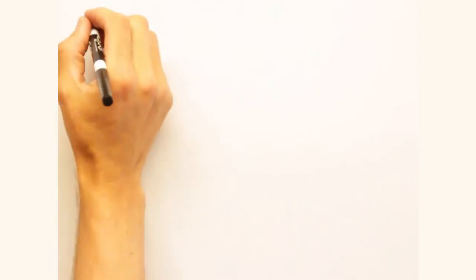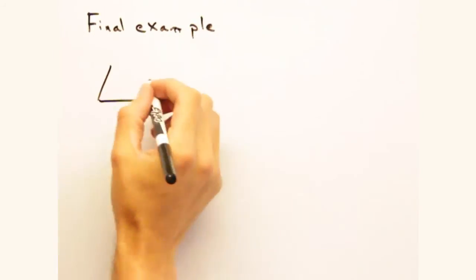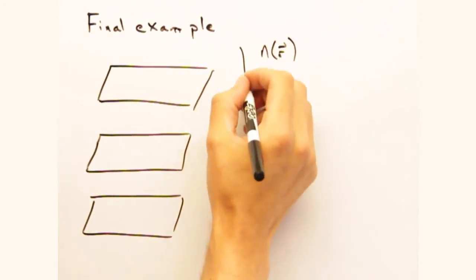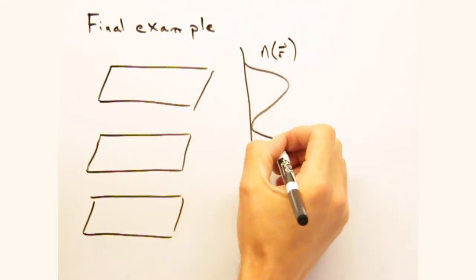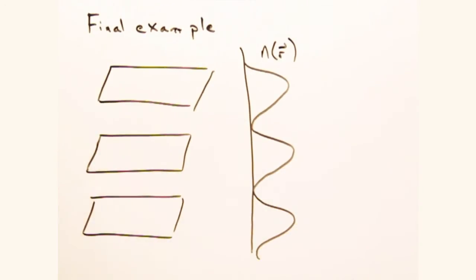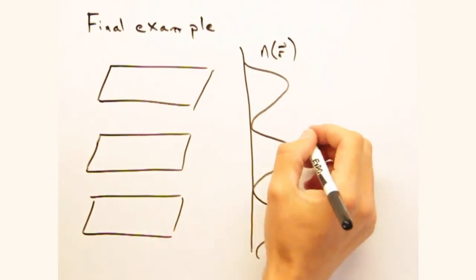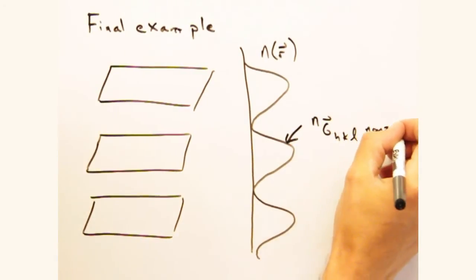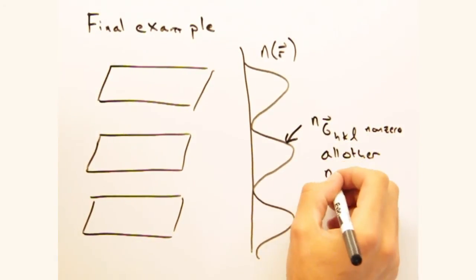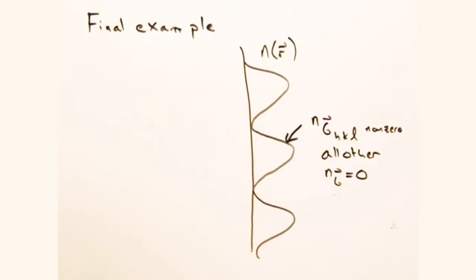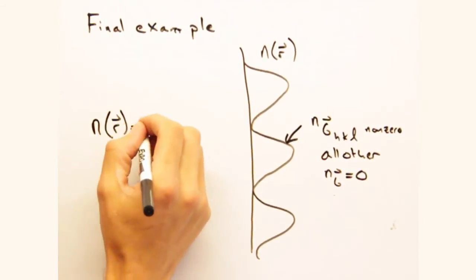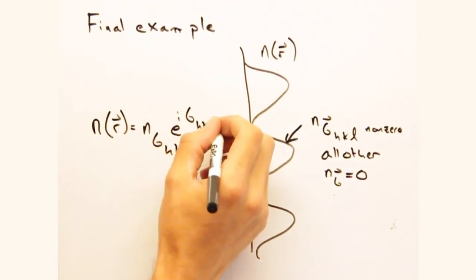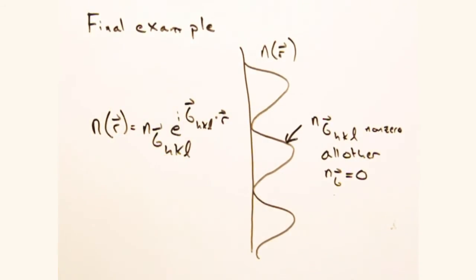Until then, let's look at a simple example. Imagine layers of graphene stacked like so in the g3 direction. We can imagine then that to first order, our n of r can be approximated as a sine wave. So since a simple sine wave can be built out of one wave, all my Fourier coefficients but one will be zero. Yeah, so we can then describe the g3 periodicity of this graphite stack in terms of a single wave vector with an associated Fourier coefficient n sub g sub hkl.